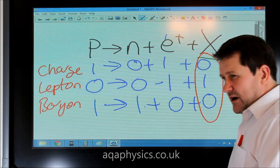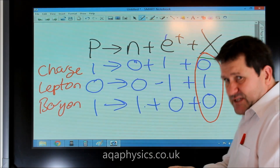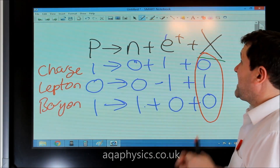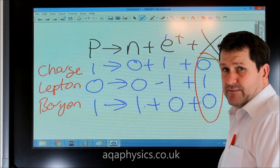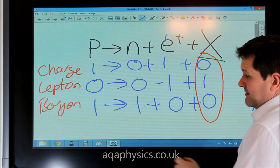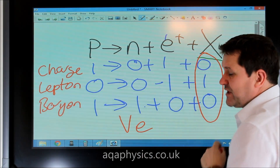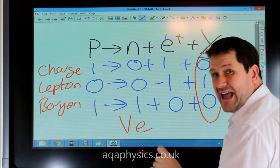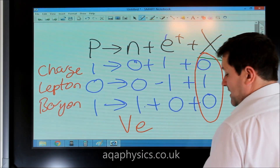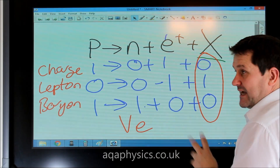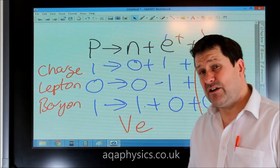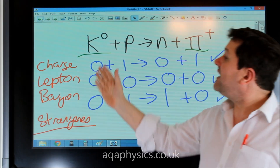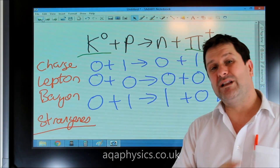So particle X must have no charge, it must be a lepton, and it can't be a baryon. The only particle that fits that description is an electron neutrino. Particle X is therefore an electron neutrino, and that's how you use conservation laws to predict missing particles or to confirm that an interaction will or will not occur.